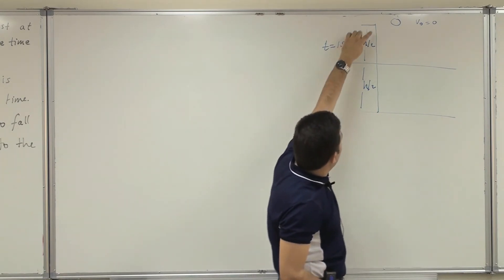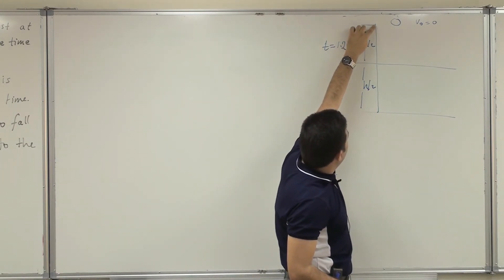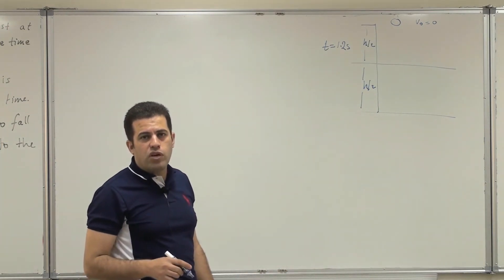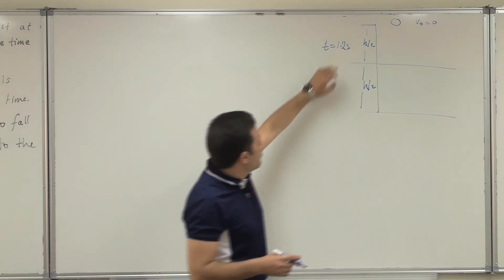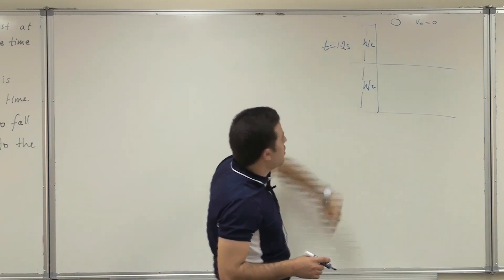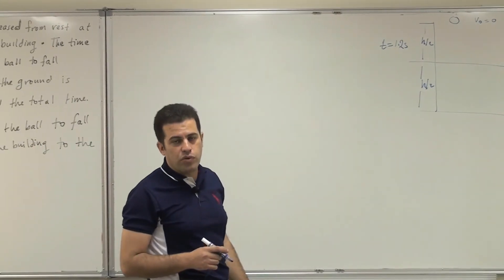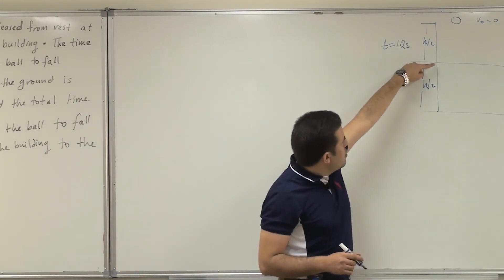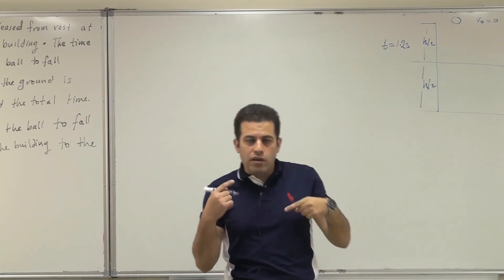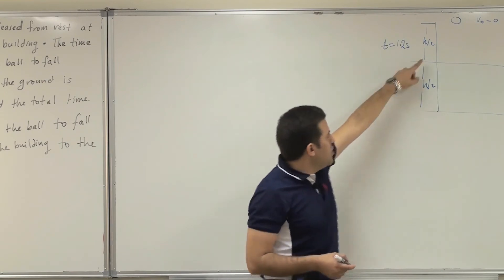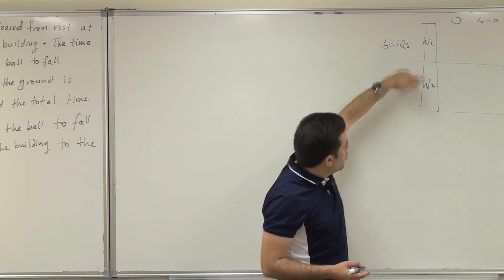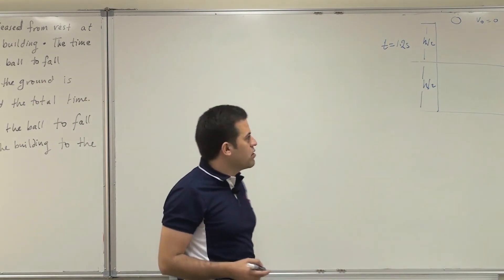A common mistake is to assume symmetry and say: because it took 1.2 seconds to reach halfway, it will take 2.4 seconds total. This is not correct. Because after passing the halfway point, its speed will be greater than in the first stage, which means the time taken will be less. So I expect less time from halfway to the ground.